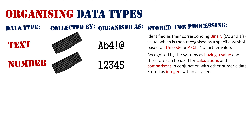We can add them together, we can divide them, we can do a whole range of things with these numbers — complex calculations, specifically if they're going to be in an information system. This is done by the way they are stored: they are stored as integers within the system, recognized as numeric, and they can change based on their interaction with other numeric data.